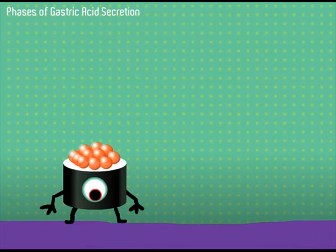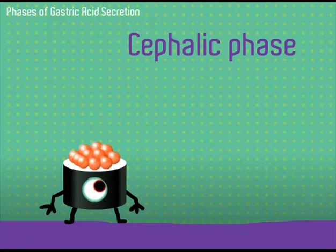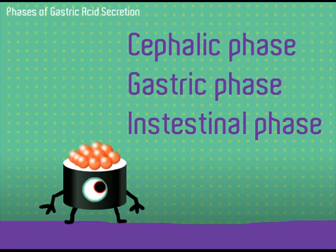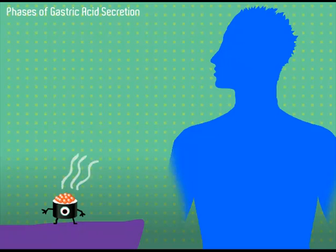Gastric acid secretion is divided into three phases: the cephalic phase, the gastric phase, and the intestinal phase.